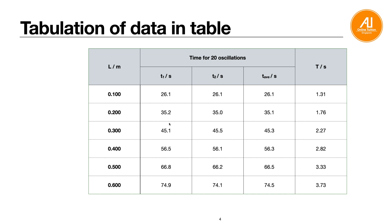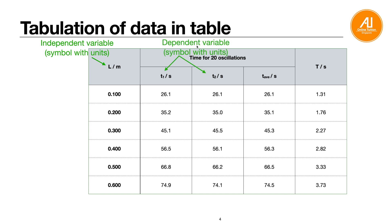How to tabulate data in your table: there are some points to watch to avoid losing marks. First, the independent variable should always be on the left-hand side of your table, with the symbol and proper units. In this case the independent variable is the length — the variable you change to get the data.